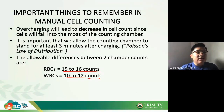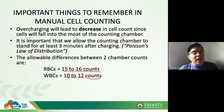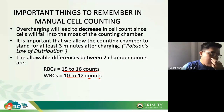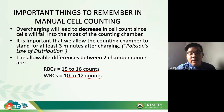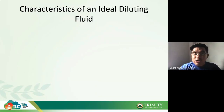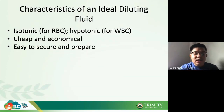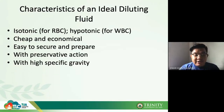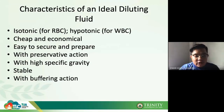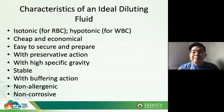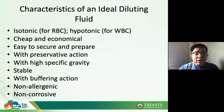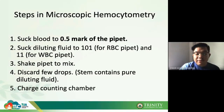Most exam questions here will be situational, so I encourage you to read the PowerPoint notes, the book, and listen to the recording again if necessary. Characteristics of an ideal diluting fluid include: isotonic for RBC, hypotonic for WBC, cheap and economical, easy to prepare, with preservative action, high specific gravity, stable with buffering action, non-allergenic, and non-corrosive.